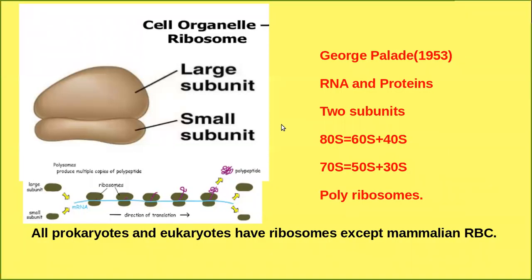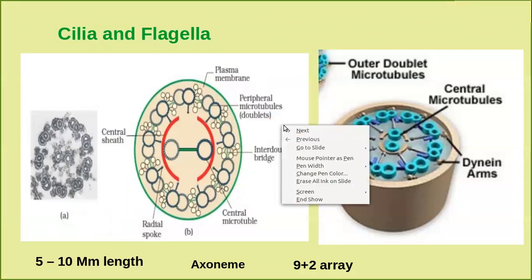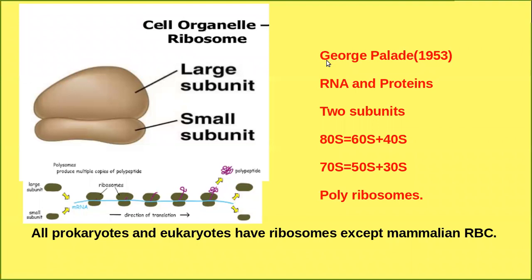Next, we discuss ribosomes. Ribosomes are granular structures first observed under the electron microscope by the famous scientist George Pellet in 1953. They are composed of RNA and proteins and are not surrounded by any membrane. All prokaryotic and eukaryotic cells have ribosomes, except mammalian RBCs.